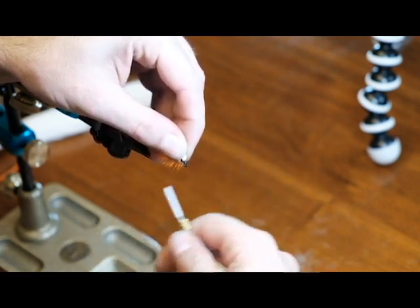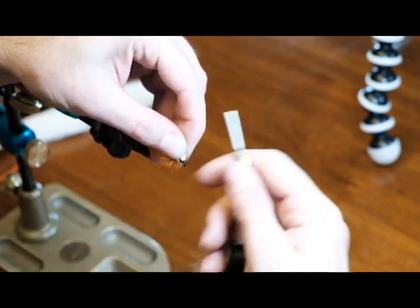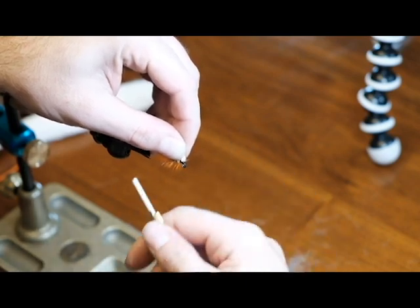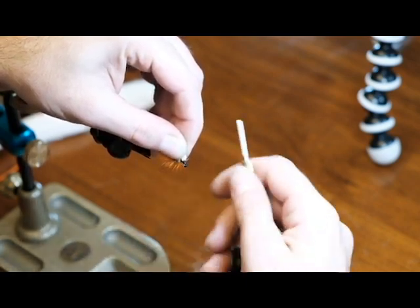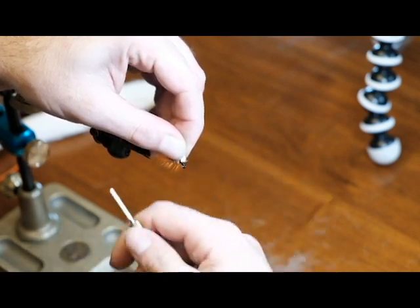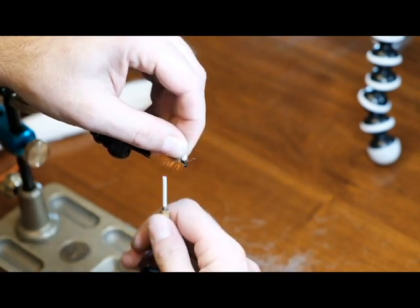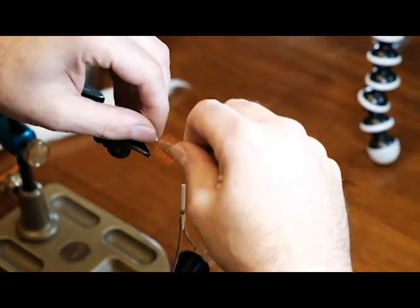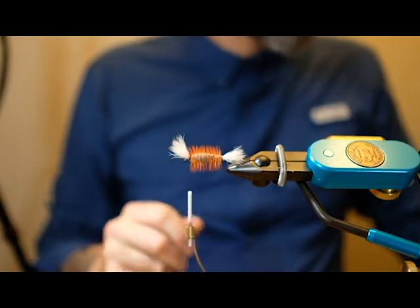I usually pull this back and I create a little bit of a ramp from the eye of the hook back to the base of this calf tail tied in, just to kind of make it pop up a little bit. This head's a little bit bigger than I would like it to be normally, but yeah.